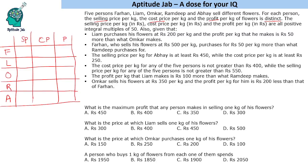First, Liam purchases flowers at ₹200 per kg, so Liam's cost price is 200. His profit per kg is 50 more than what Omkar makes. So let's say Omkar makes a profit of x — then Liam will make a profit of x plus 50.